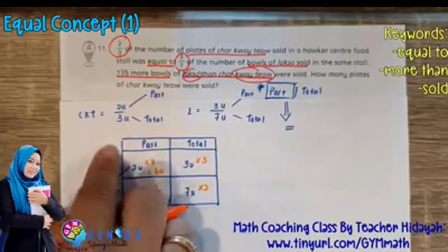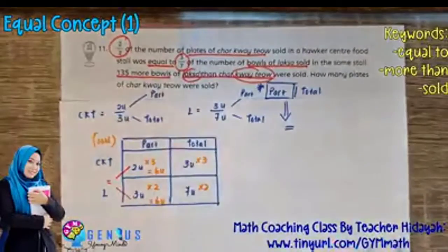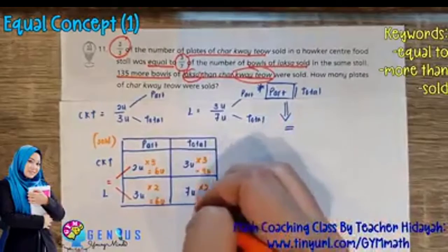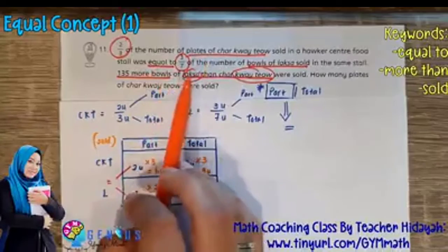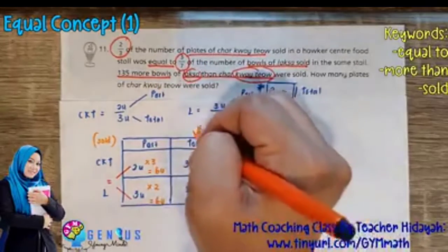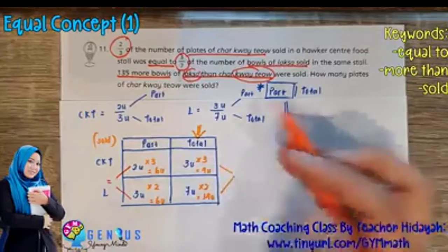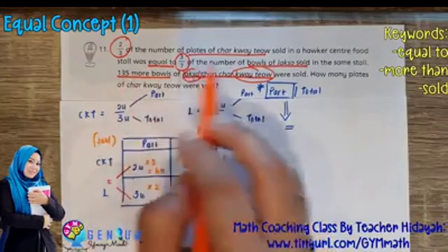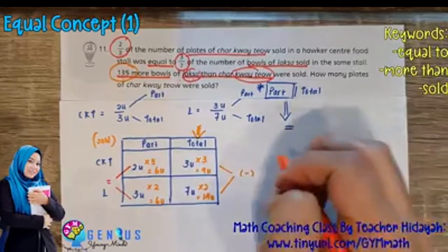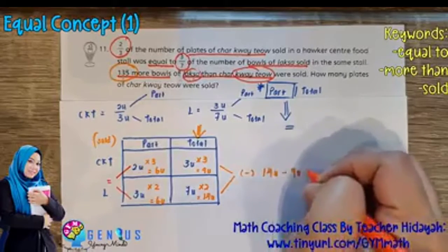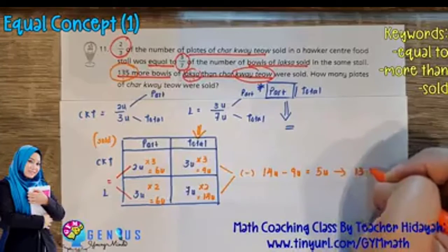The char kway teow total becomes nine units and the laksa total becomes 14 units. We are comparing the total number of laksa and char kway teow. Laksa is more than char kway teow — the question tells us 135 more — so we subtract: 14 units minus nine units equals five units, and these five units represent 135.